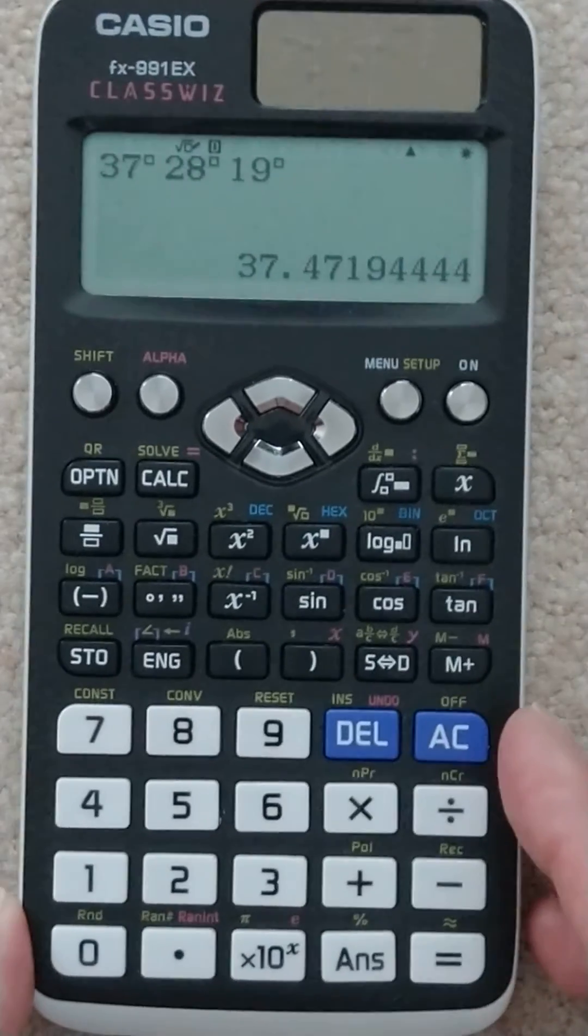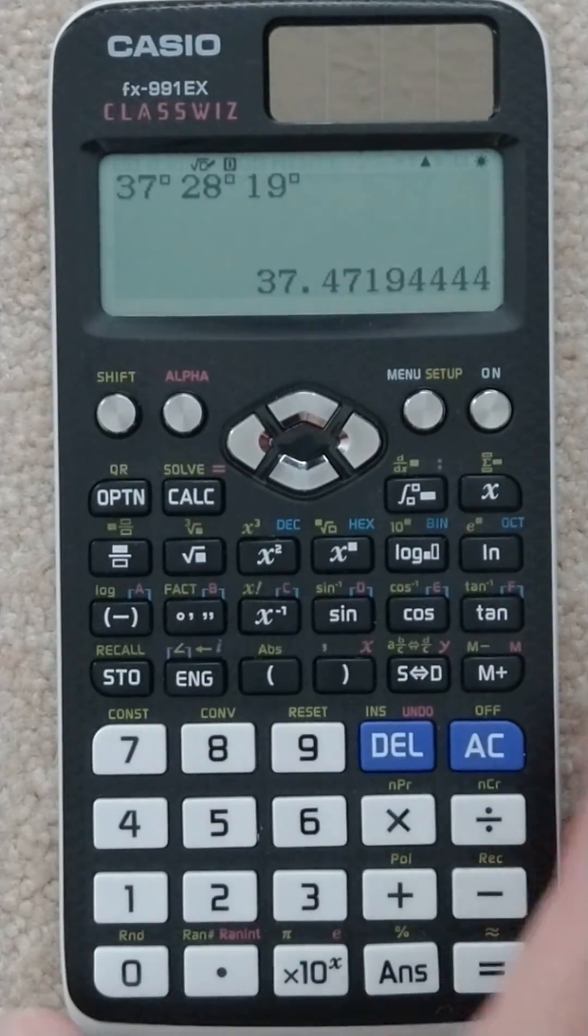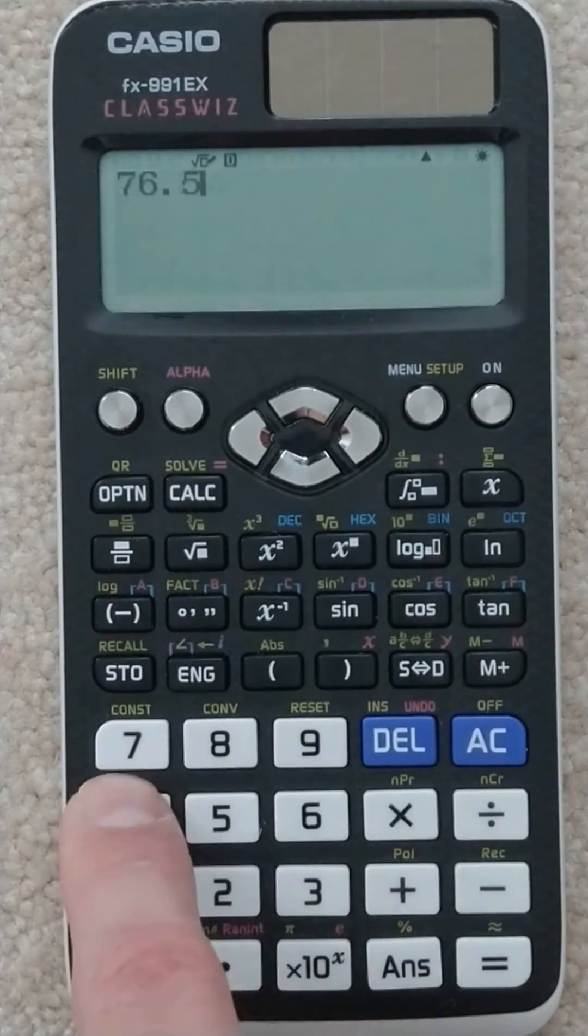All right, so we put in what we want to convert. Obviously I could have just converted back what I've got here, but 76.543.